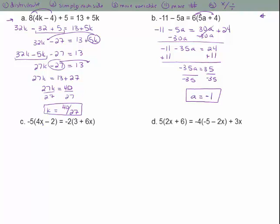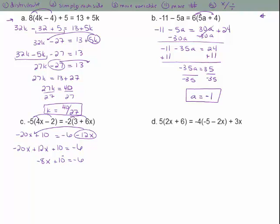For example C with distribution on both sides: negative 5 times 4 is negative 20x, negative 5 times negative 2 is positive 10, negative 2 times 3 is negative 6, negative 2 times 6 is negative 12x. Nothing to simplify on either side, so pick up negative 12x and move it: negative 20x plus 12x is negative 8x plus 10 equals negative 6. Move the 10 — it becomes negative — giving negative 8x equals negative 16. Divide by negative 8, and x equals positive 2.